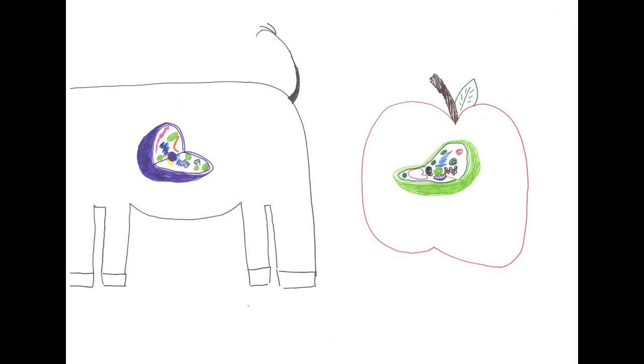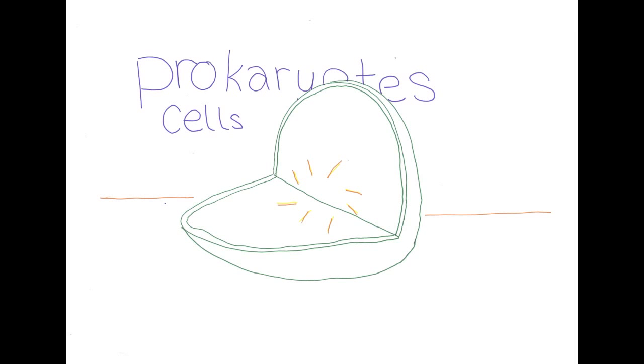The cell membrane exists in animal cells and in plant cells, while the cell wall only exists in plant cells, fungi, and some prokaryote cells, which are cells that exist as an individual cell and do not have a nucleus, such as bacteria.